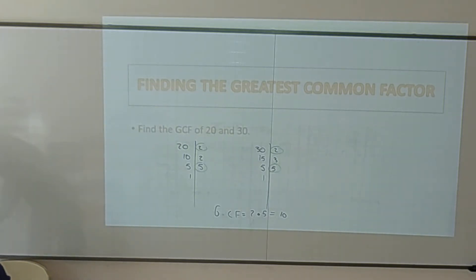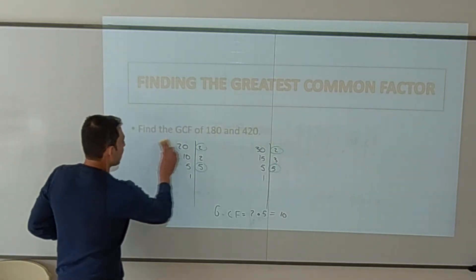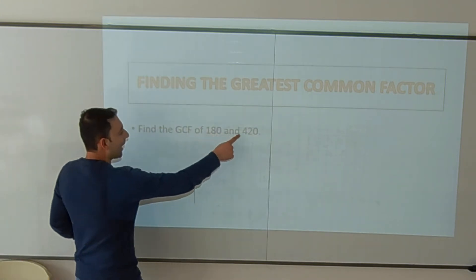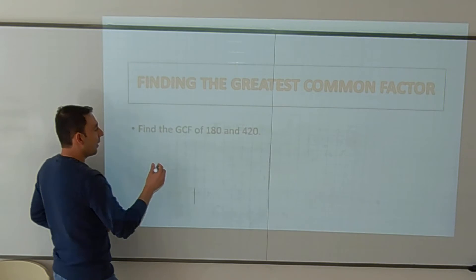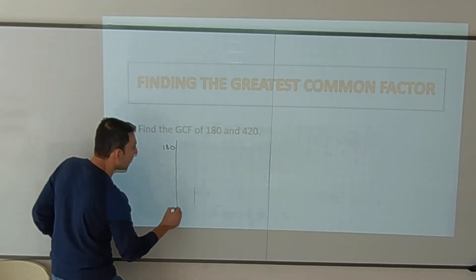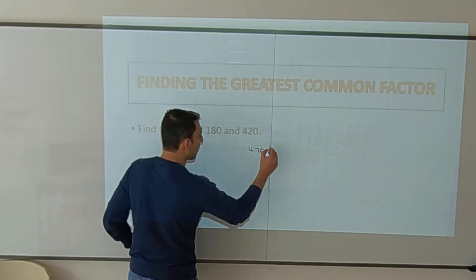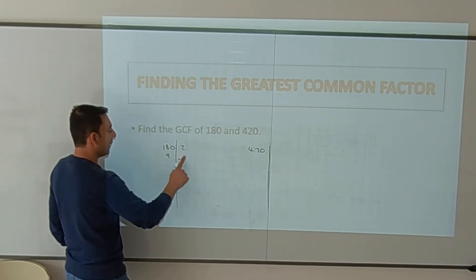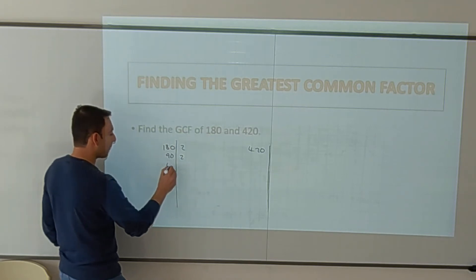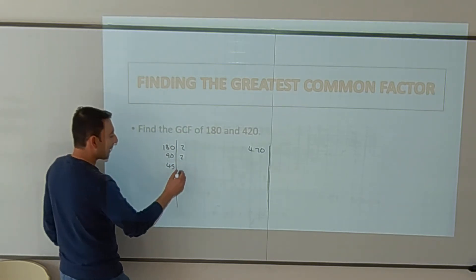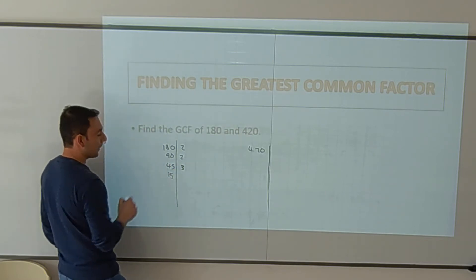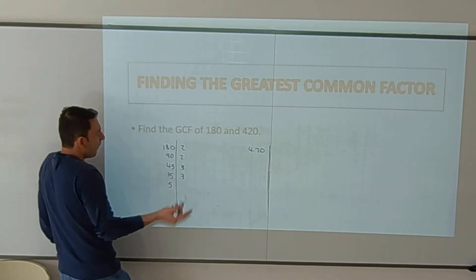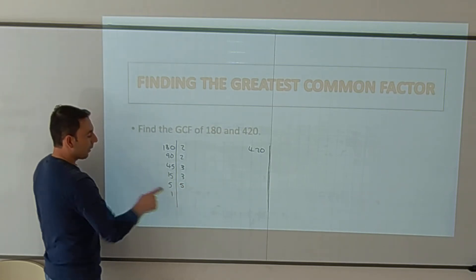Let's look at a second example. We have to find the greatest common factor of 180 and 420. Using prime factorization for 180: divide by 2 to get 90, divide by 2 to get 45, divide by 3 to get 15, divide by 3 to get 5, divide by 5 to get 1. We're finished with 180.